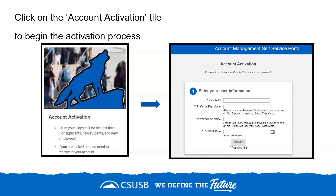You will need your Coyote ID number — a nine-digit number with leading zeros — your first and last name, preferred name if you have one on file, or otherwise your legal name, and your full birthdate, then click Submit. Please note the correct formatting must be used for the birthdate: two-digit month, two-digit date, and four-digit year. All personal information will be validated against what is on file.